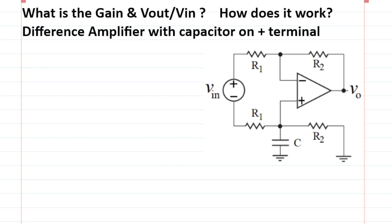A difference amplifier with capacitor on positive terminal is shown here. It's a negative feedback loop, so everything is properly connected. Now we want to see, even with the capacitor located here, how does this work? And what is the gain and transfer function Vout over Vin?